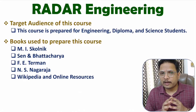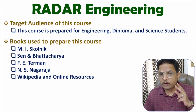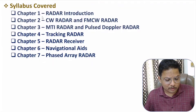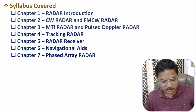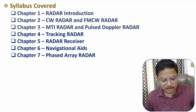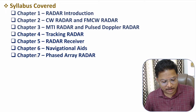This is a comprehensive course where I have placed all the fundamentals related to radar engineering. If you observe the syllabus of this course, in total seven chapters are there. The first chapter is based on radar introduction, the second chapter is based on CW radar and FMCW radar, the third chapter includes MTI radar and pulse Doppler radar, the fourth chapter covers tracking radar, the fifth chapter is based on radar receiver, the sixth chapter is about navigational aids of radar, and the last chapter is based on phased array radar systems.